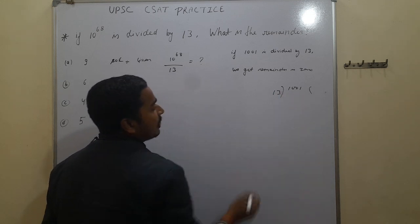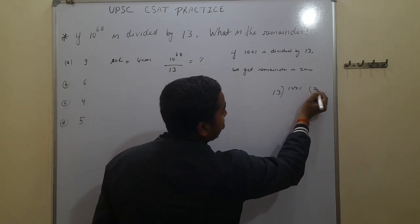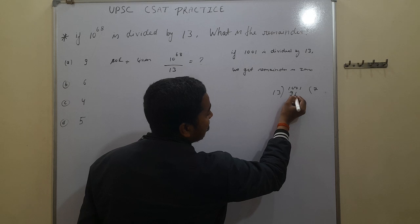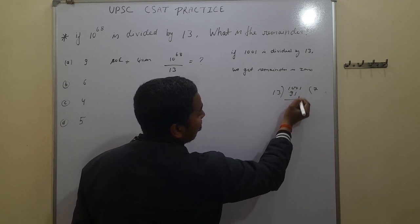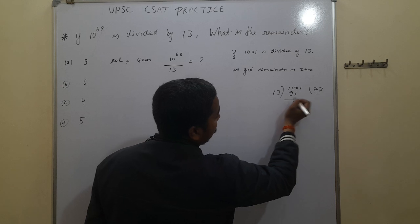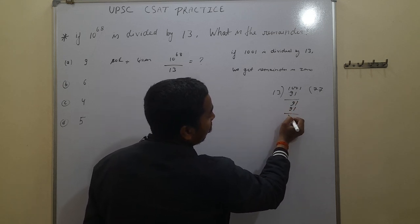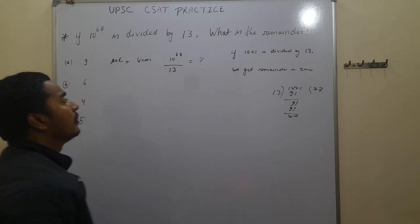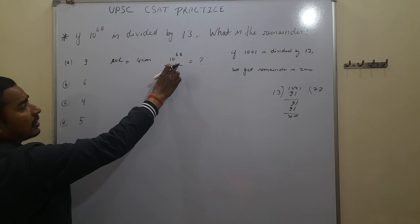13, 7, 19, 1, and this gives 9. We have to note down here. And again we have to 13, 7, 19, 1, we get remainder is 0. From here we have to break the 10 to the power 68.